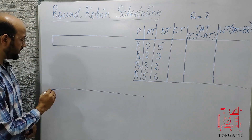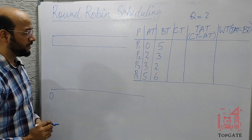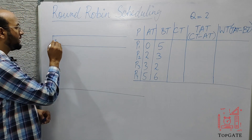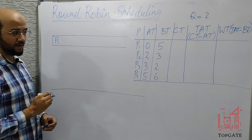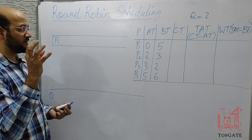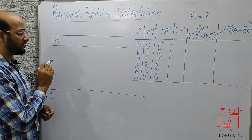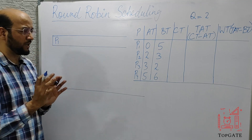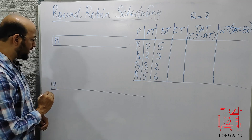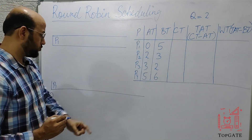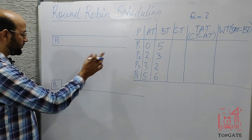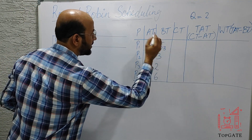At time zero, only P1 is in the ready queue. We take P1 from the head and schedule it. It starts at 0, requires 5 units but the time quantum is 2, so it executes for 2 time units and stops at time 2. Out of 5 units, 2 are done — 3 units remain.